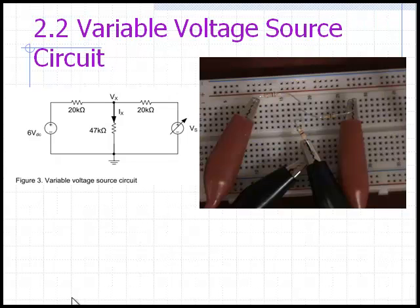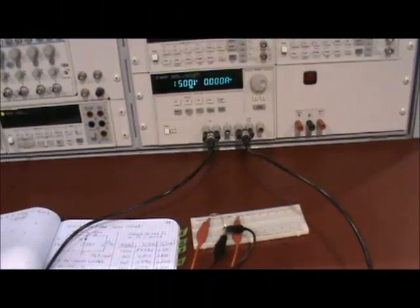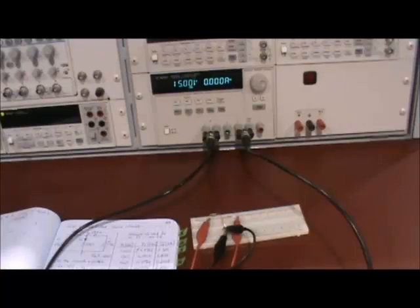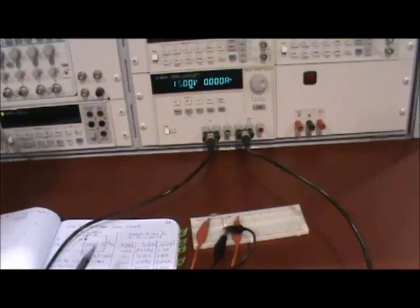In part 2.2, you will set up the circuit of figure 3. This circuit has two voltage sources. Use the plus 6 voltage source for the constant voltage on the left and use the dual power supply to set up the variable voltage source on the right.